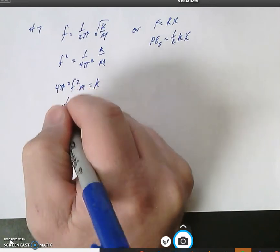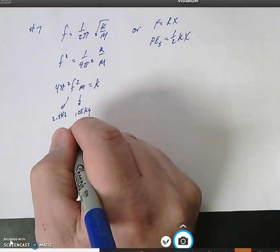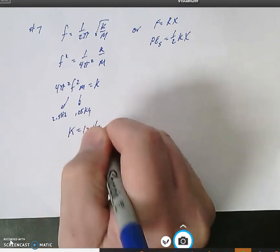Our frequency is 2.5 hertz. We plug all those things in and we get a k value equal to 12 newtons per meter.